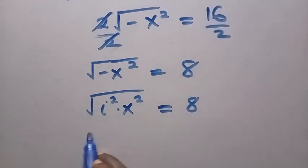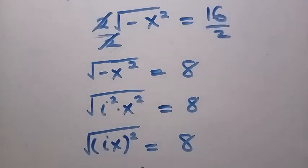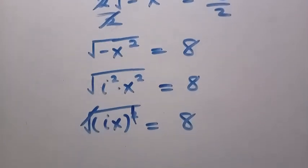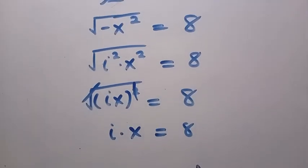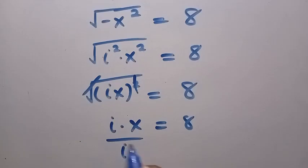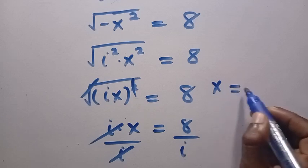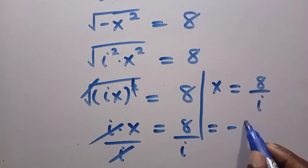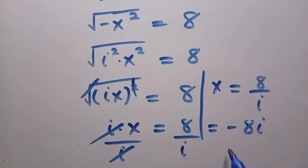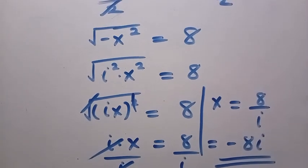This becomes the square root of (ix)² equals 8, so canceling square and square root gives ix equals 8. Dividing both sides by i, x equals 8 divided by i, which equals minus 8i — the same answer, different method. This is how to solve this problem. Thanks for watching, see you in the next video. Never stop learning.